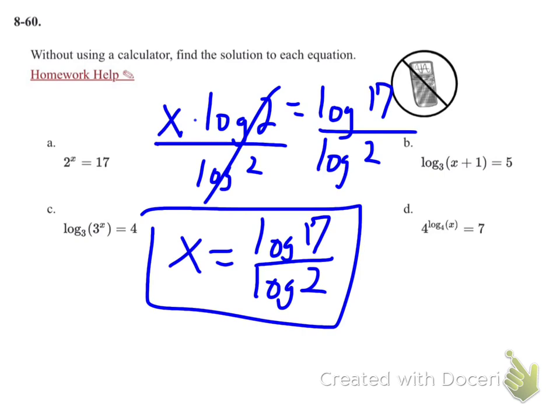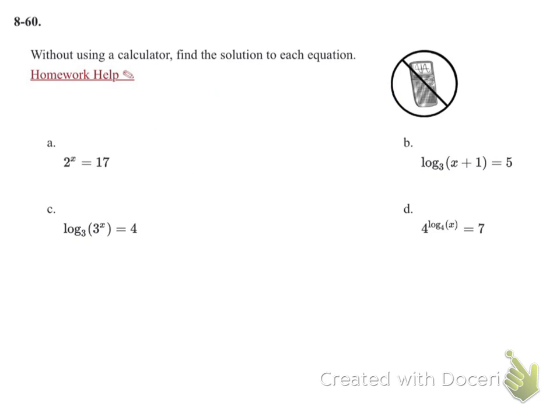Looking at problem b, this is in log form. I'm going to switch it back to exponential form, so base of 3, exponent is 5, so 3 to the 5th equals x plus 1.